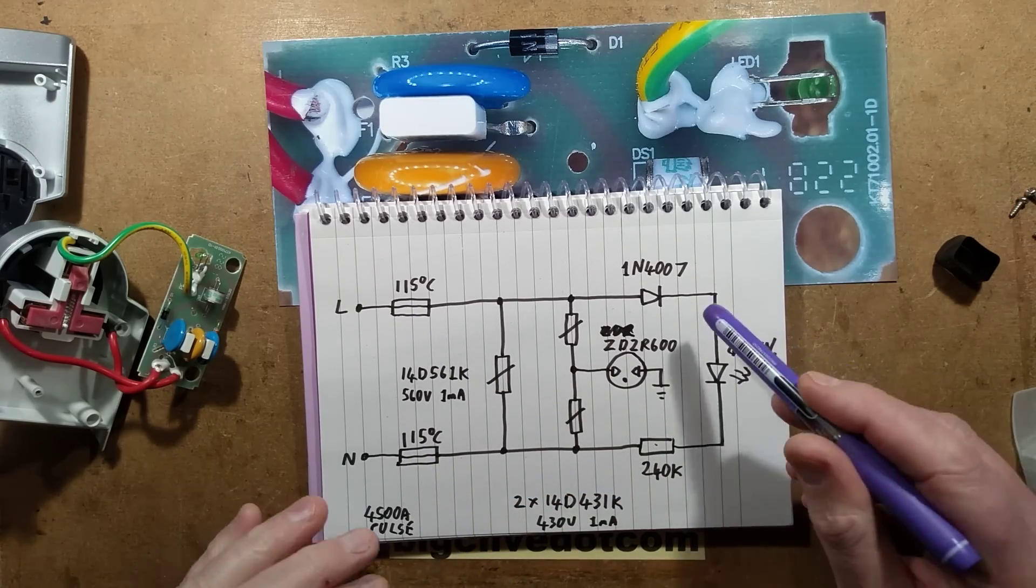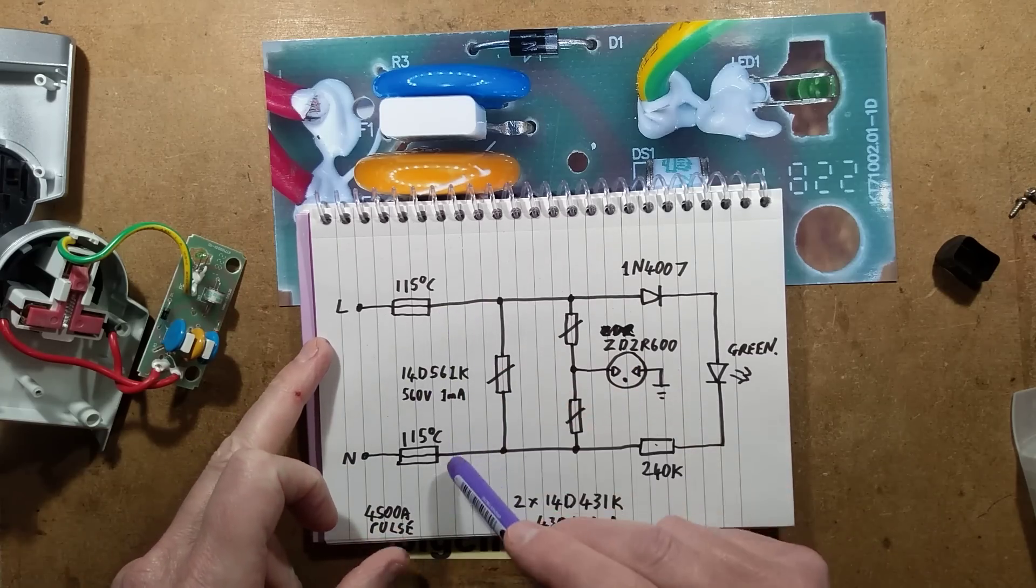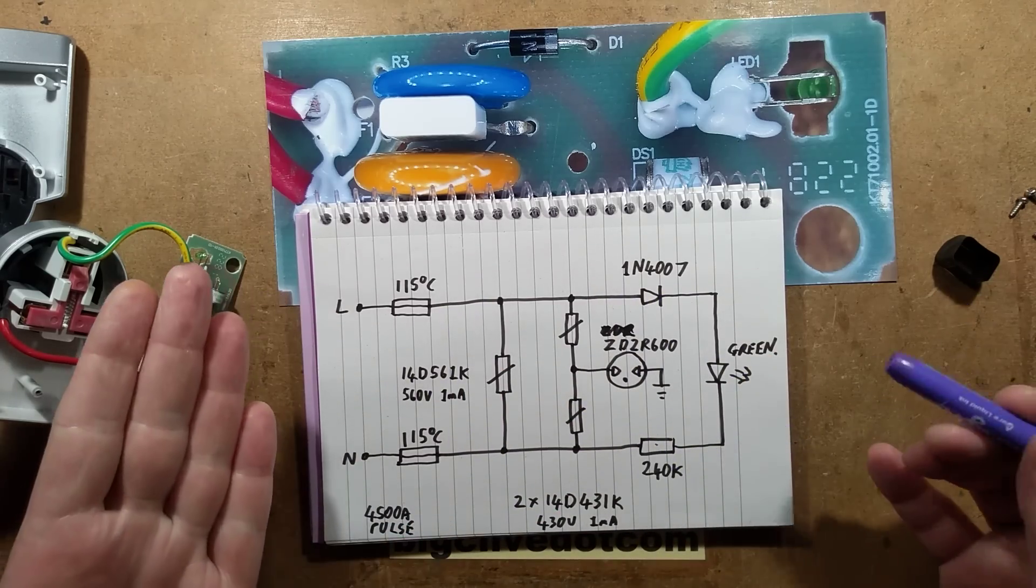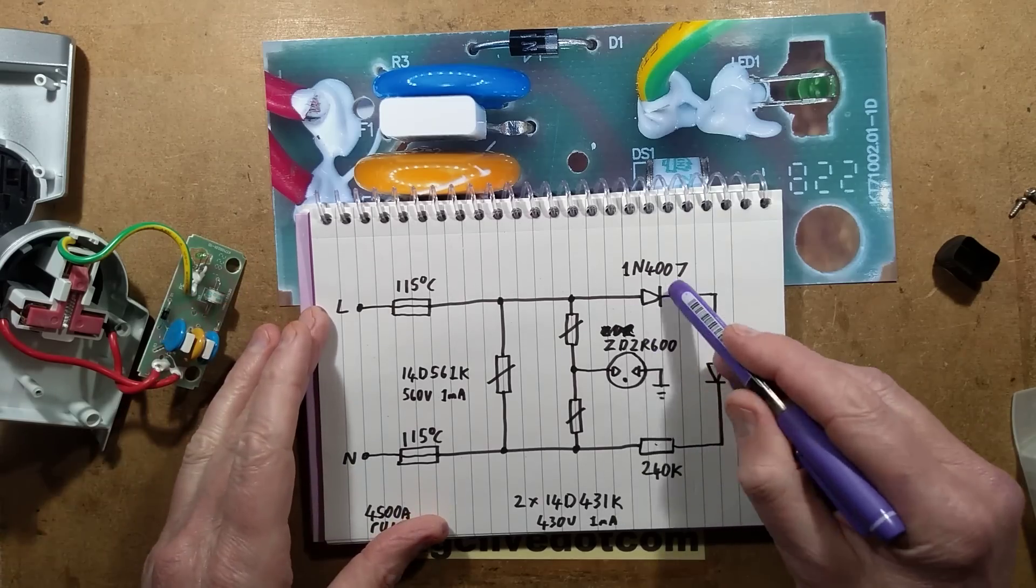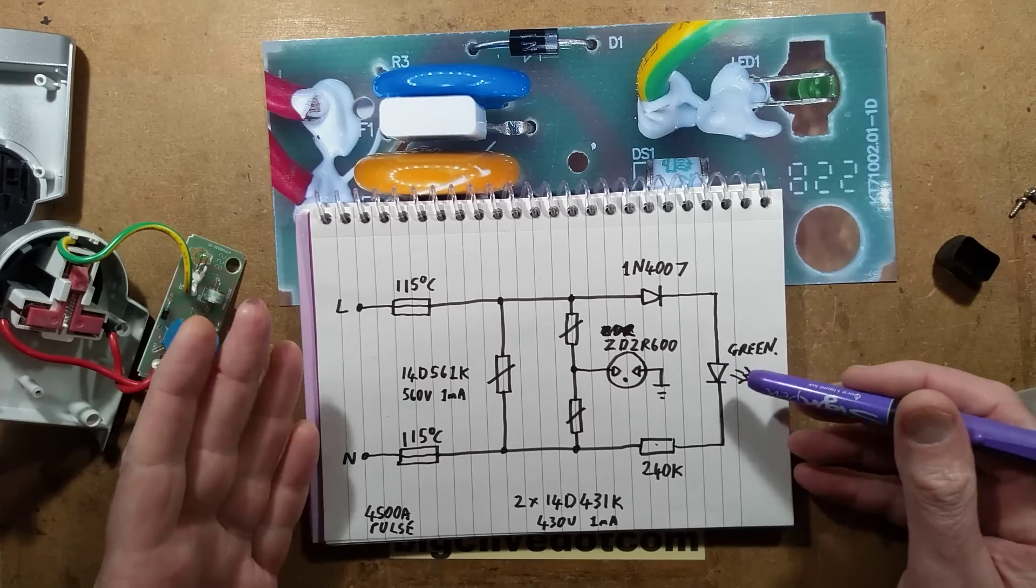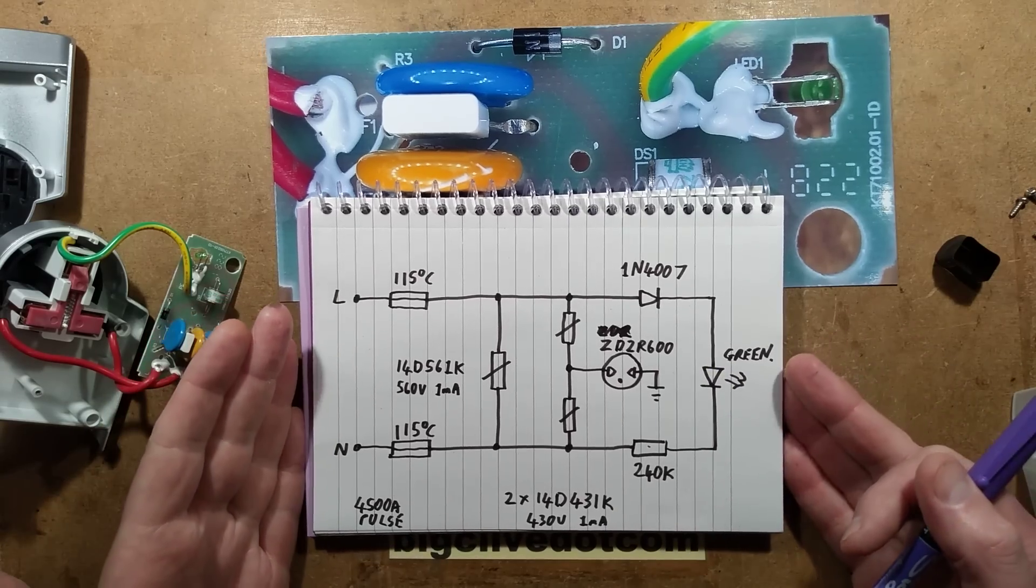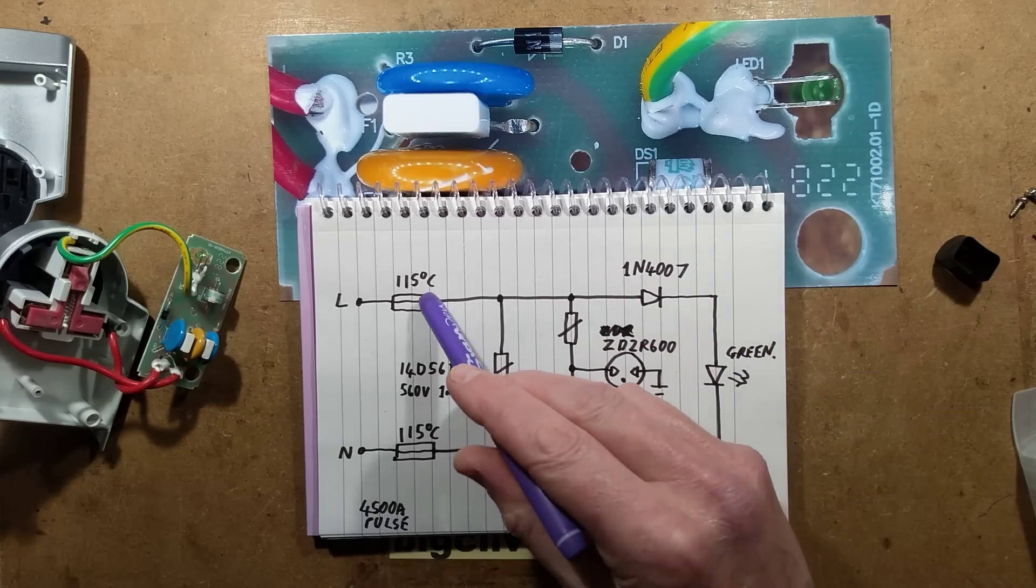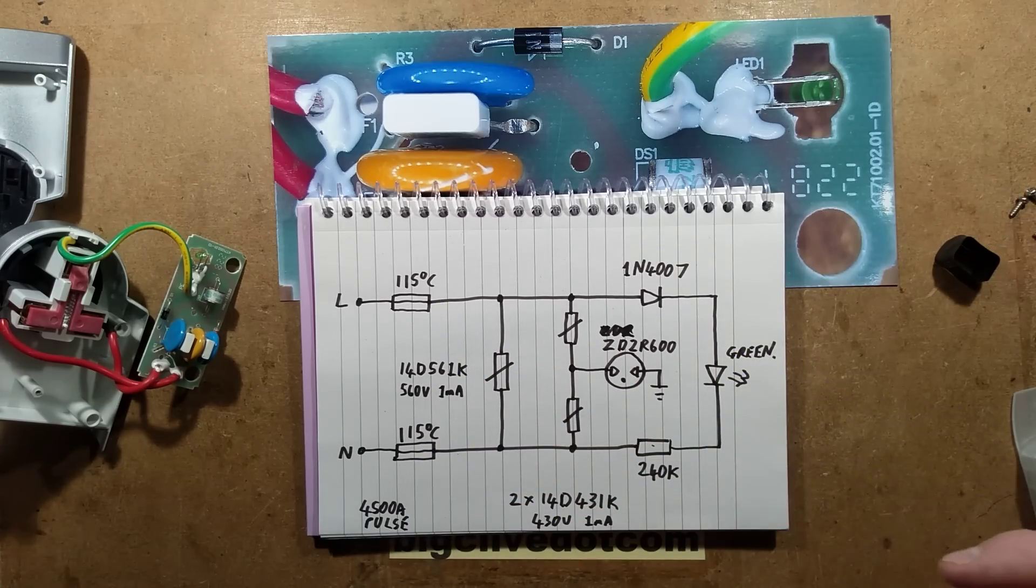The green LED is just powered from both sides of those thermal fuses through the diode through the resistor. It'll pass 1 milliamp but it's only half wave so it's about half a milliamp, and it's gallium phosphide green, it's the old technology green, so it's just quite a dull glow. And the only time it'll go out is when one of these thermal fuses fails.